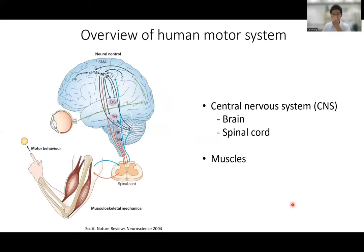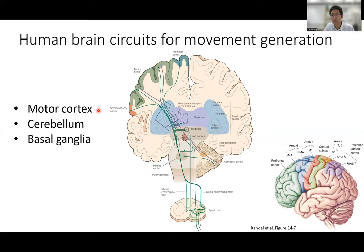Now let's go up to the brain level. I will talk about three brain regions directly related to movement generation: motor cortex, cerebellum, and basal ganglia. The cerebral cortex can be divided into many regions with different functions. We are particularly interested in areas 4 and 6, which constitute the motor cortex. The cerebellum is located in the lower part of the brain with strong connections to the spinal cord. The basal ganglia are located deeper in the brain.